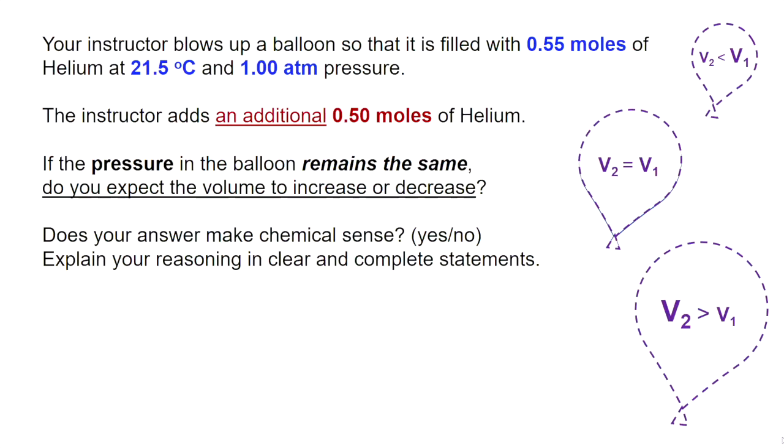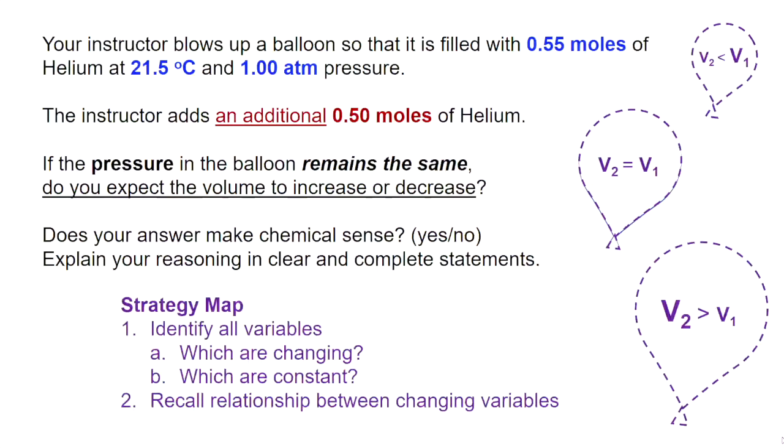If you weren't able to start the question on your own, I'll provide you with a strategy map. First, let's identify all of the variables, which are changing and which are constant. Then we'll recall the relationship between the changing variables to let us predict if our volume is going to increase or decrease after more moles of helium were added to the balloon.